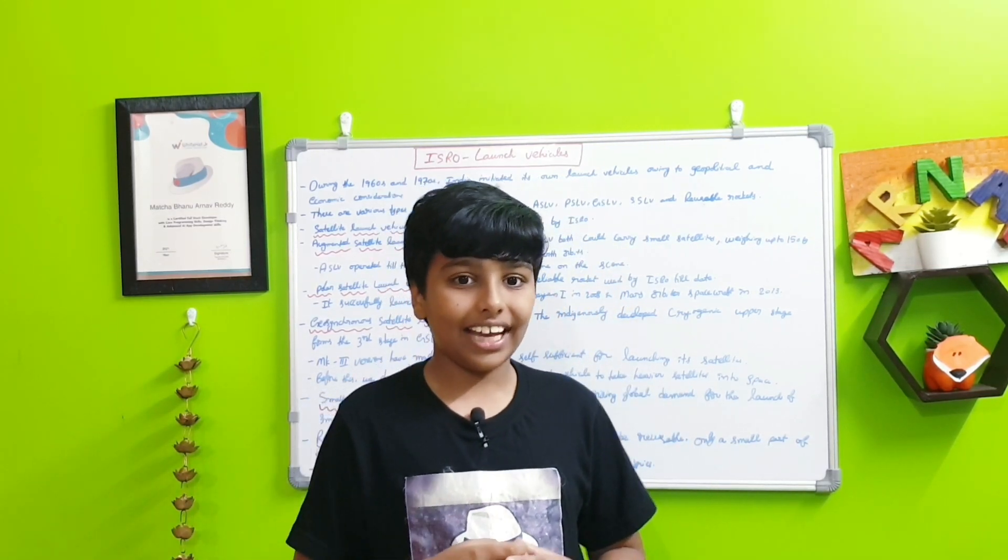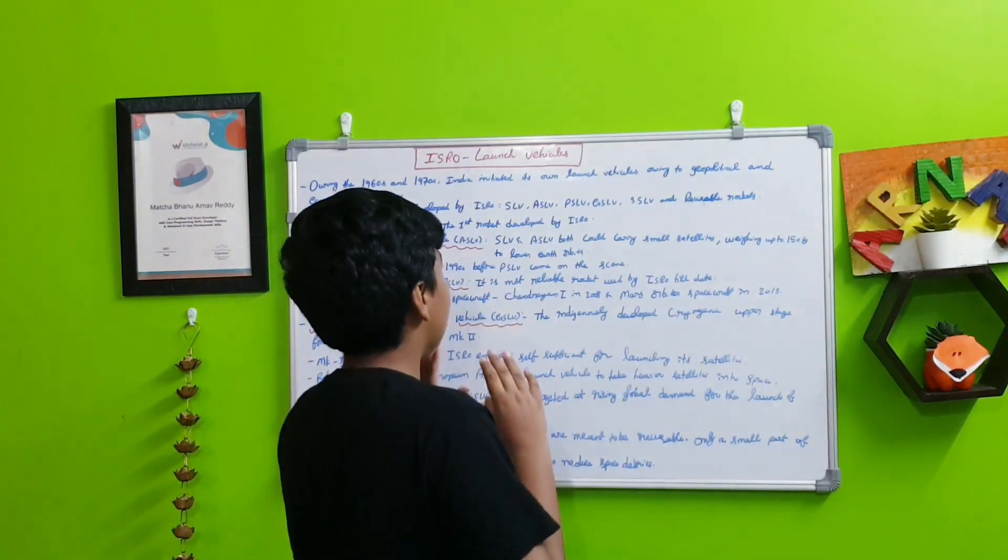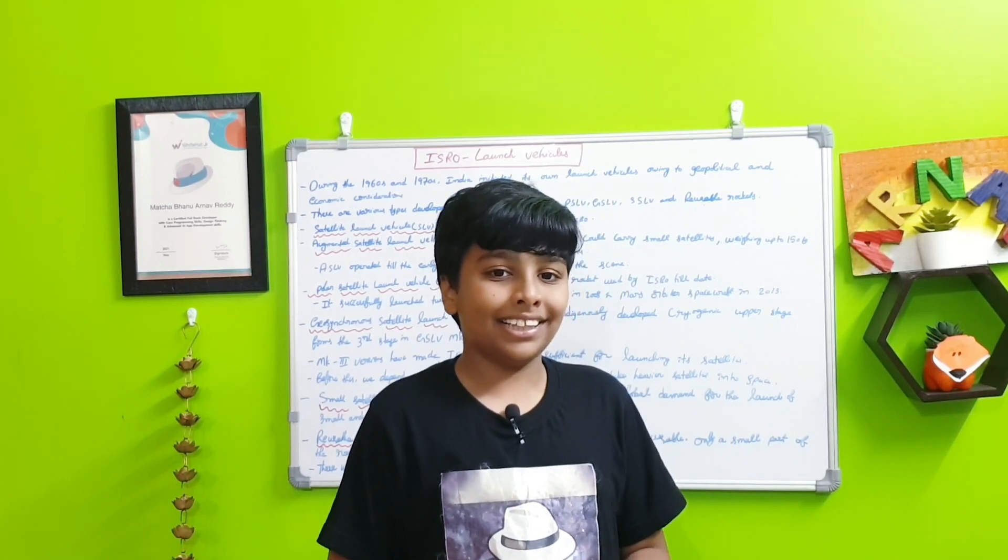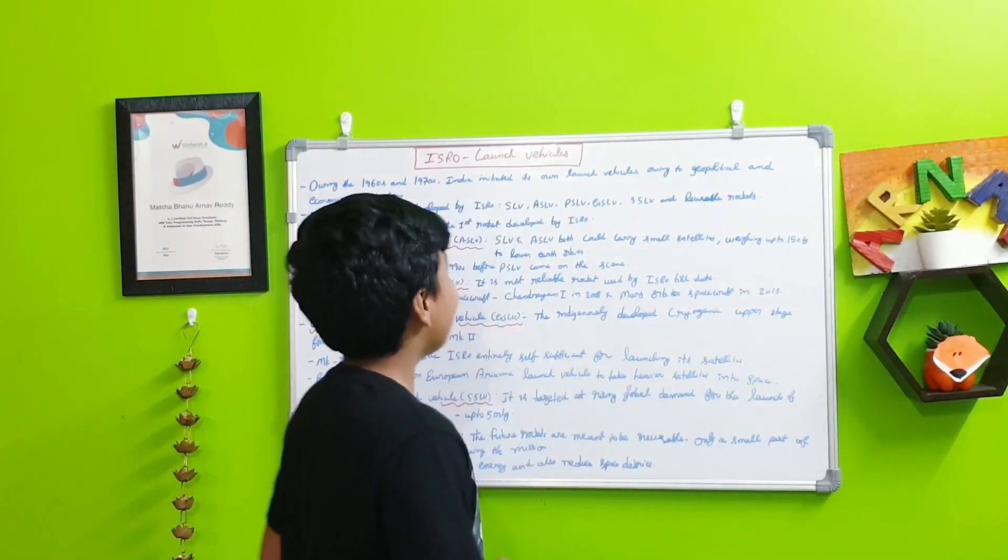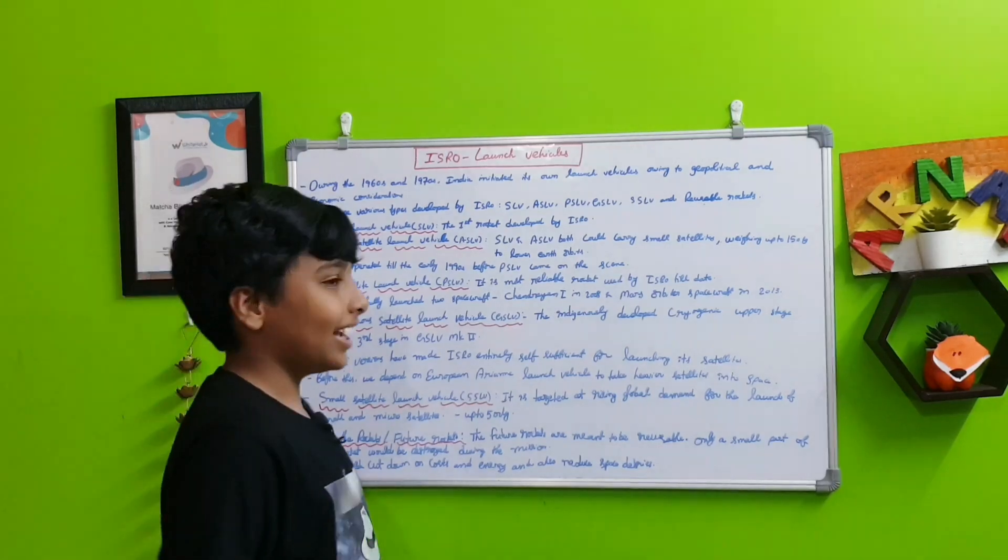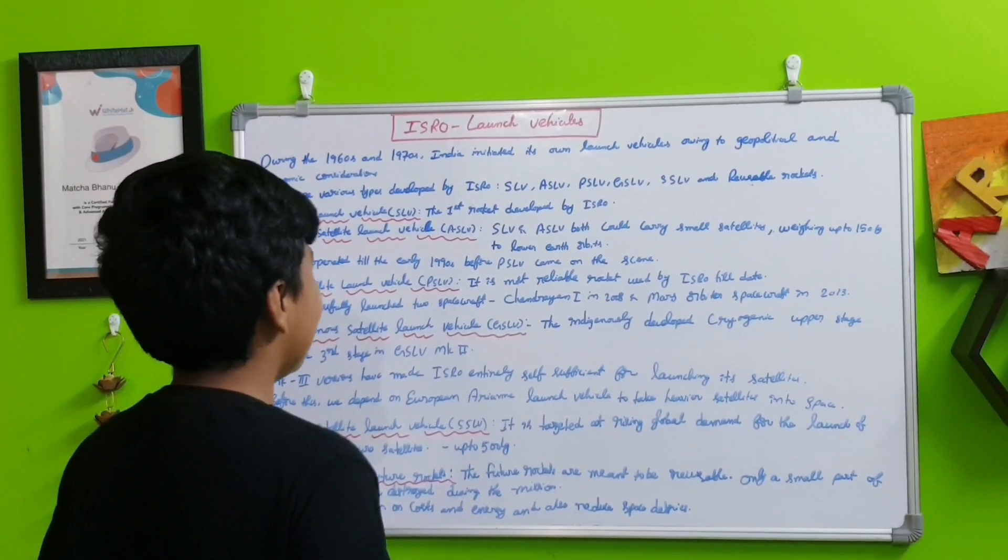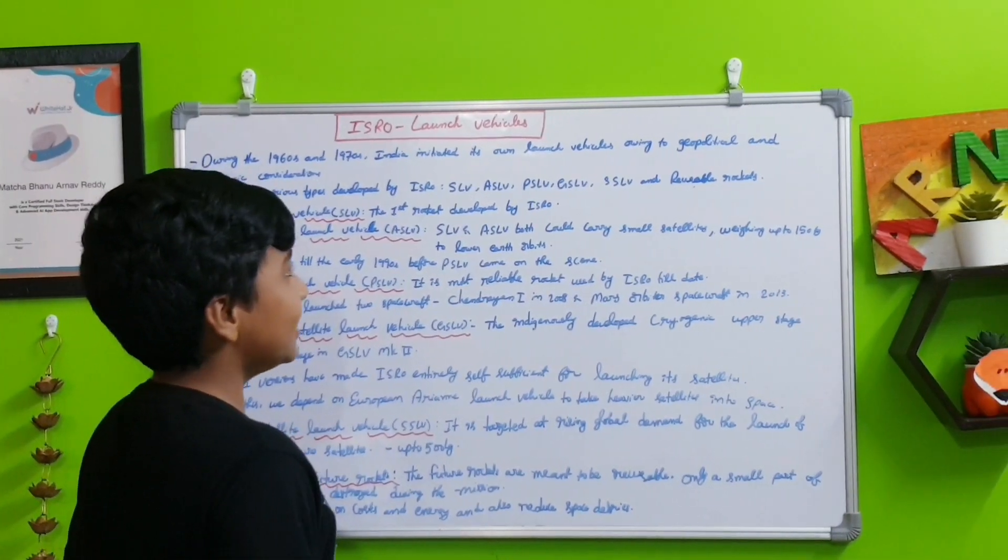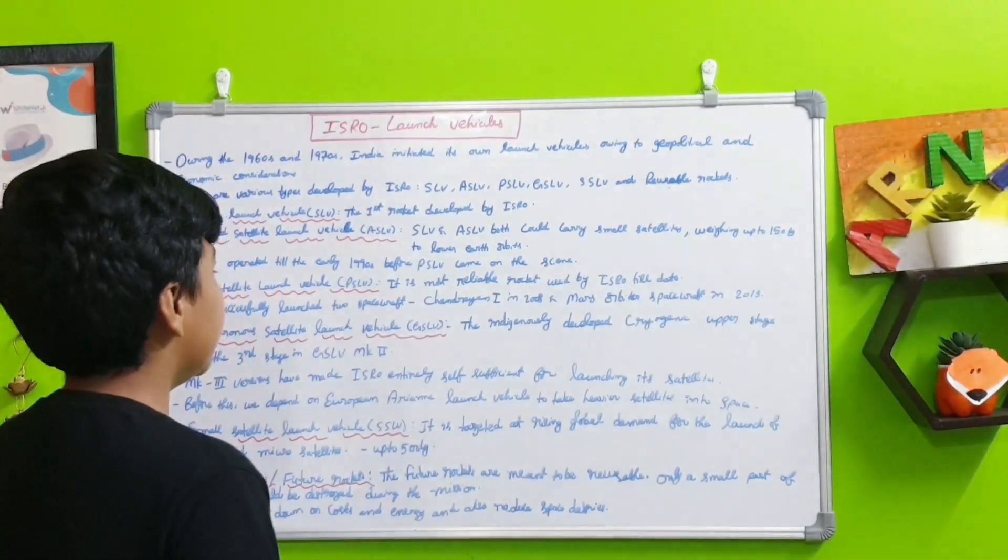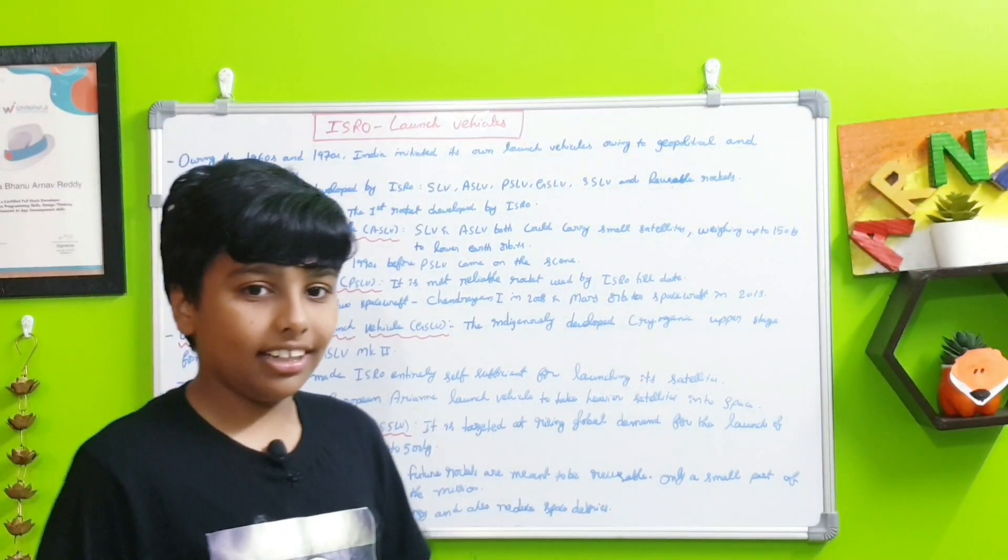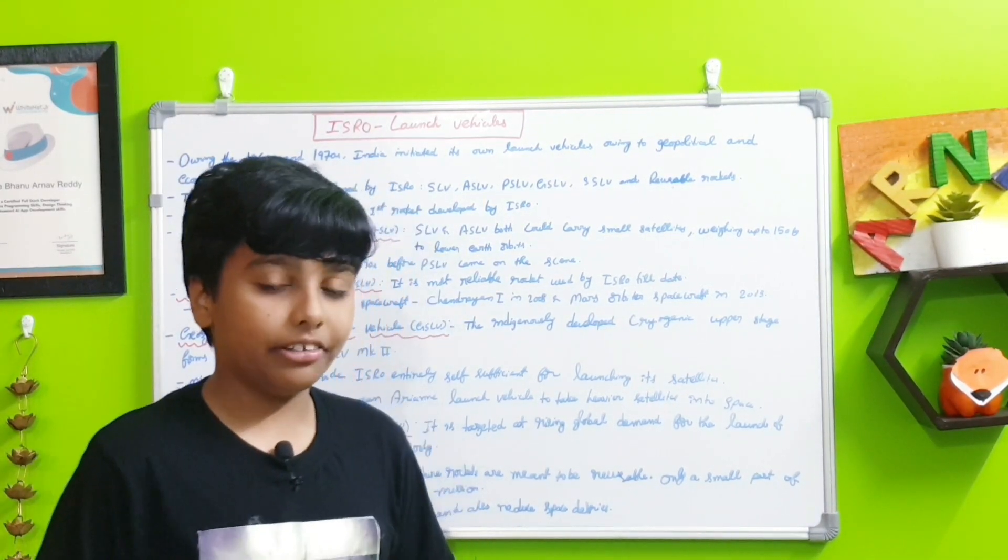To easily say, a rocket or launch vehicle is just like a bus. The satellites are people while the rockets are the bus. During the 1960s and 1970s, India initiated its own launch vehicles due to geopolitical and economic considerations. In this period, India wanted to make their own launch vehicles.